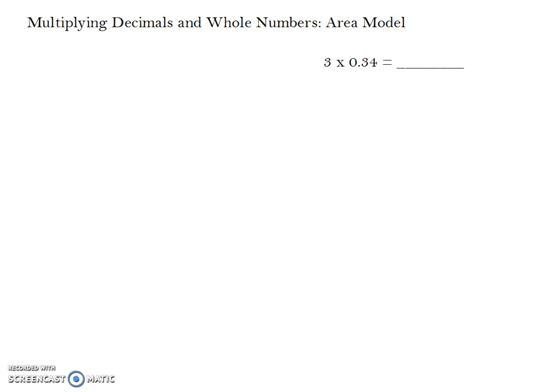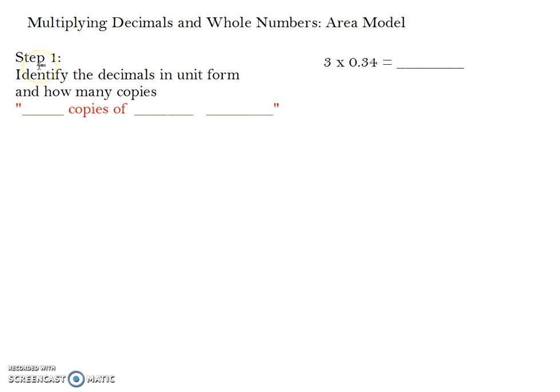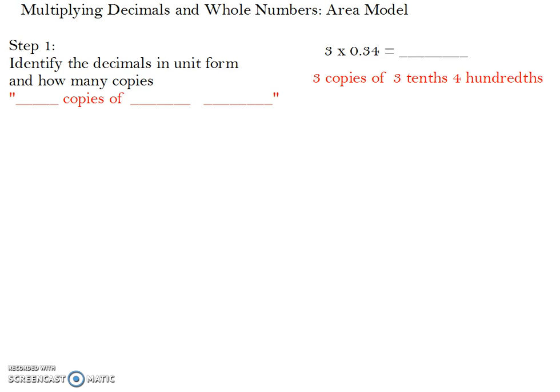Next, let's take a look at the second way that we can approach multiplying decimals and whole numbers, and that way is using an area model. We'll be using the same equation, 3 times 0.34, or 34 hundredths. Step 1 is the same as using a place value chart. We want to identify the decimals in unit form and how many copies. Same with the other one, we can say that we have 3 copies of 3 tenths and 4 hundredths. In the area model, it is especially important to identify the decimal in unit form, breaking it down into how many of each place value you have.